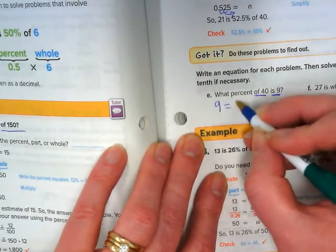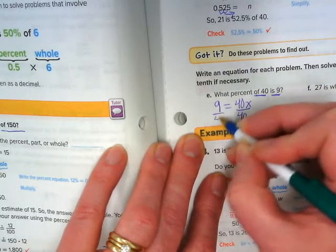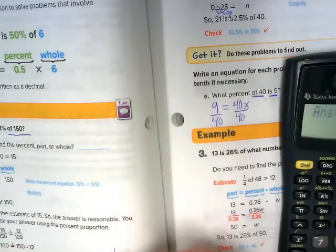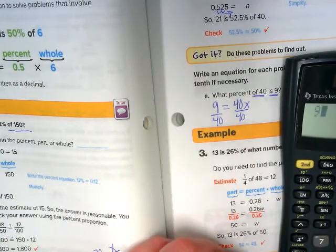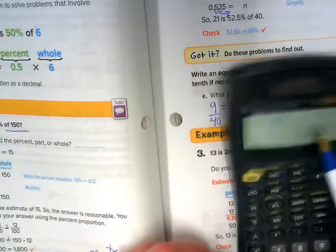Of 40 is our whole, so we're going to do 40. I like to use x as my variable. Divide by 40. You can tell it's going to be a decimal because 9 is less than 40.